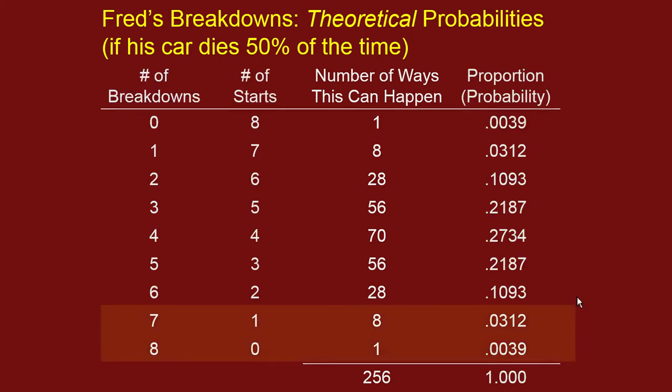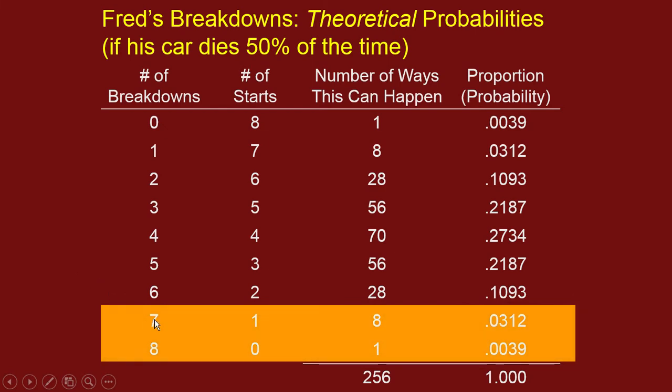We can look at these things. Here are the probabilities of seven breakdowns, or eight. And instead of successes, I said breakdowns here. You just need one of these columns. So seven or eight successes, seven or eight events that we're interested in out of eight total. Well, exactly seven is about a 3% chance, and exactly eight is about a 0.4% chance.